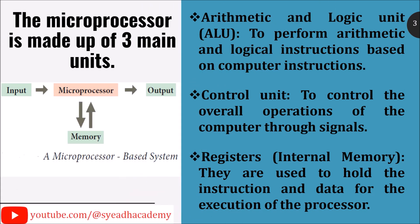The microprocessor is made up of three main units. The first one is the Arithmetic and Logic Unit, which performs arithmetic and logical instructions based on computer instructions. The second one is the Control Unit, which controls the overall operations of the computer through signals. The third one is Registers, which are used to hold the instruction and data for the execution of the processor.